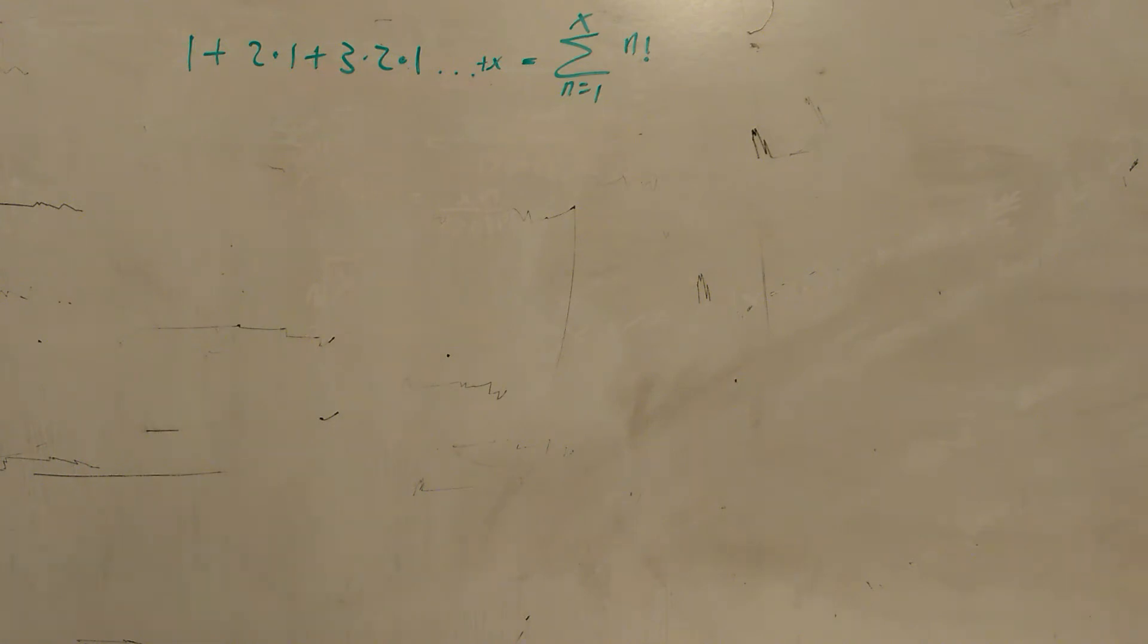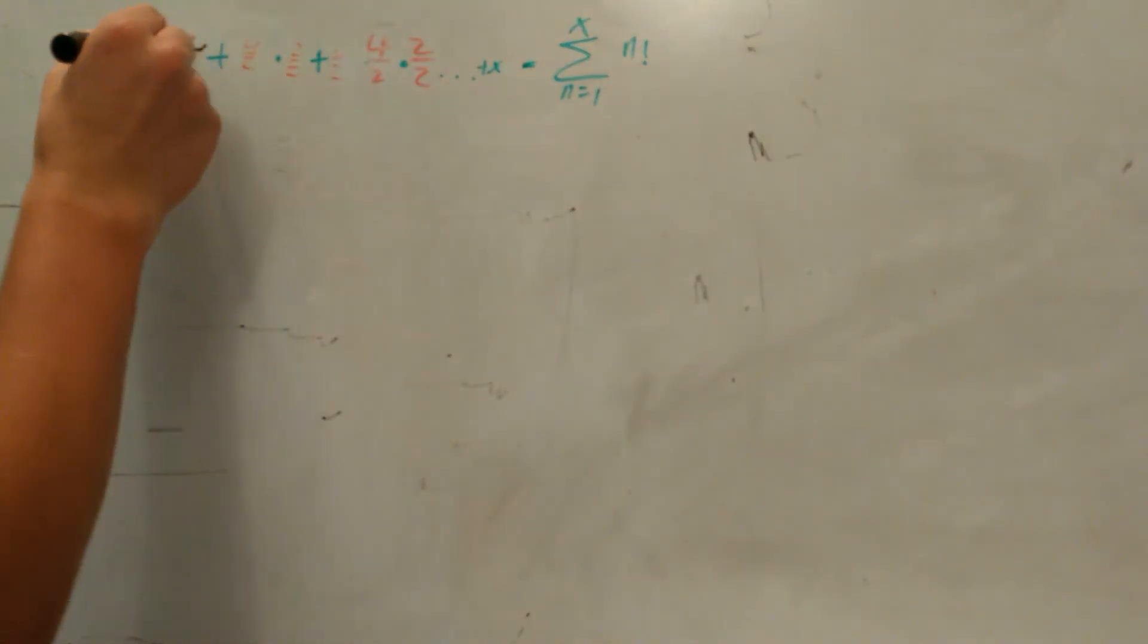Now what we can do is we can change all of these to something over 2. For instance, 1 is equal to 2 over 2, 2 is equal to 4 over 2, and then 1 as previously said is 2 over 2.